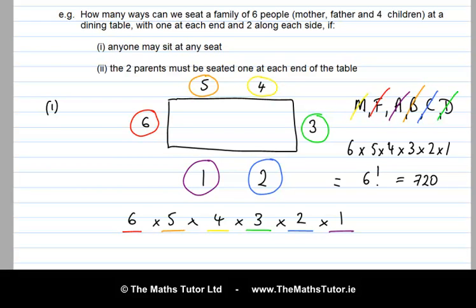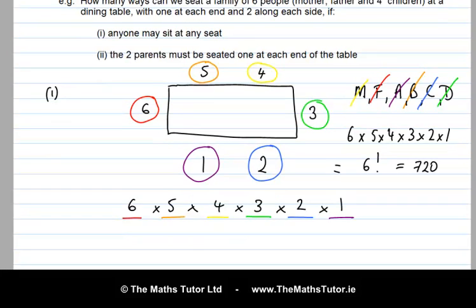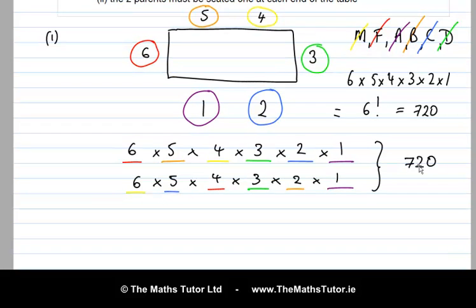And remember, it doesn't really matter which seat we decide to fill first. So we could do this in a completely different order. So we could start with the yellow seat. How many choices do we have? Six. And then the blue seat, we've got five remaining choices. Four, three, two, and one again. So in any case, it's still going to come out as 720. So with no restrictions, we've got a lot of arrangements or permutations in this scenario.